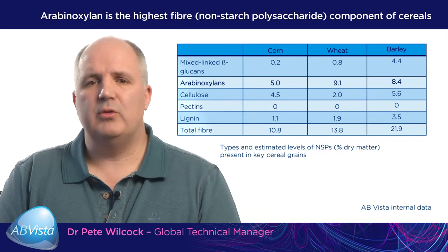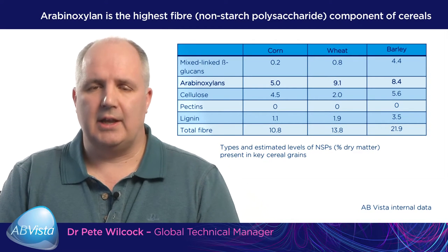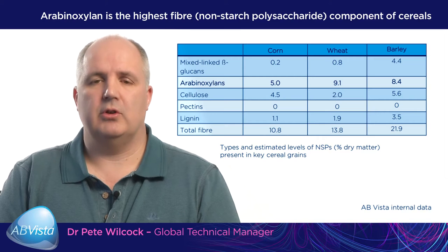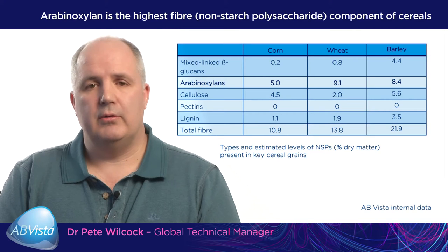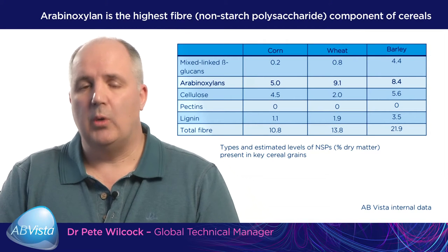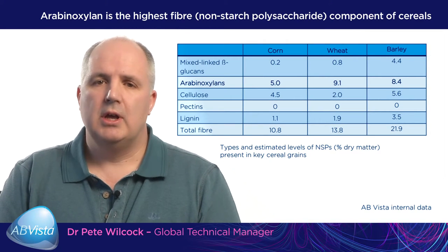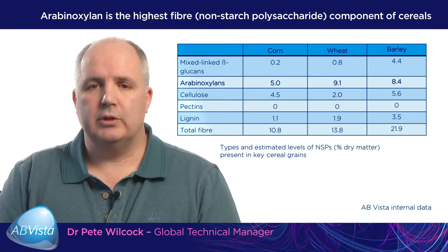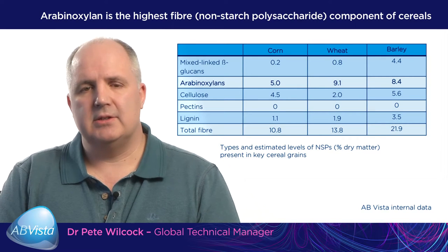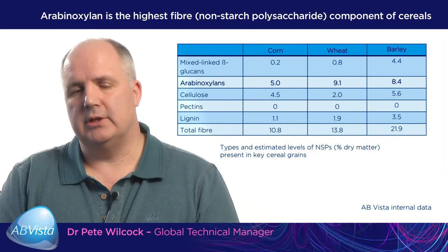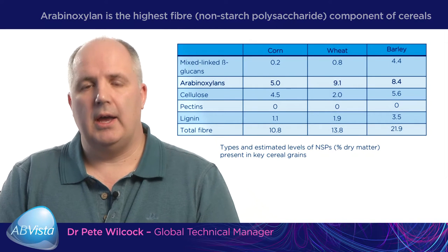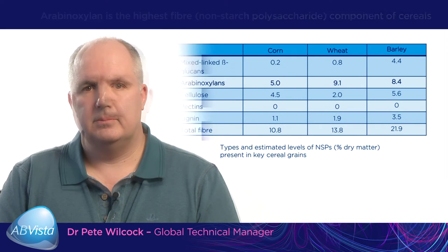If we use xylanase, we can reduce the viscosity and therefore improve digestibility, or we can break down and punch holes in the cell wall, giving access to the starch and protein to the pig's or chicken's own endogenous enzymes.